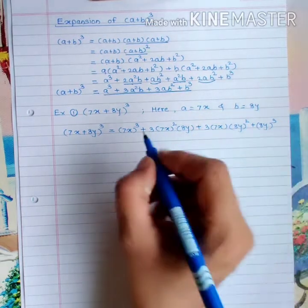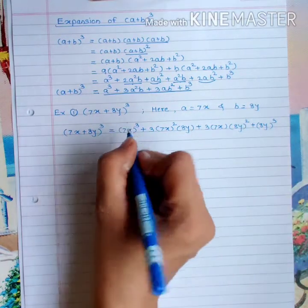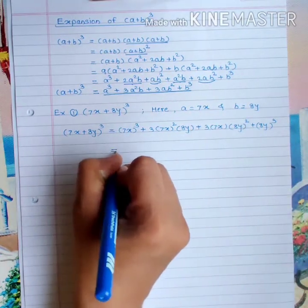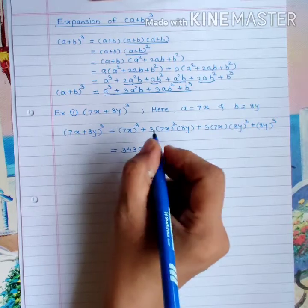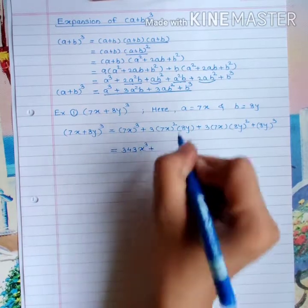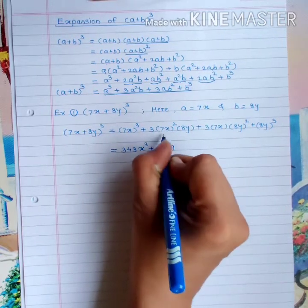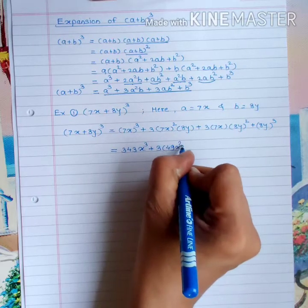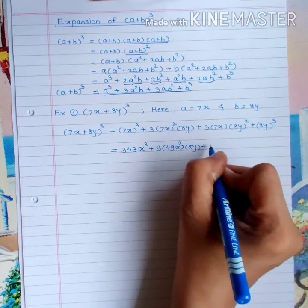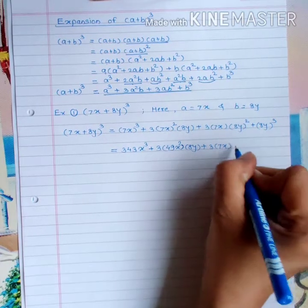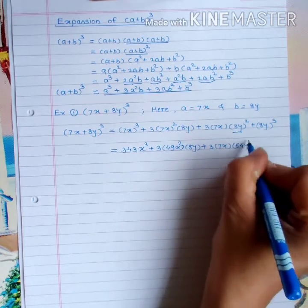Now we will compute the cubes and squares and then multiply. Cube of 7x: 7³ = 343, so we get 343x³. Then 3 × (7x)² × 8y = 3 × 49x² × 8y.